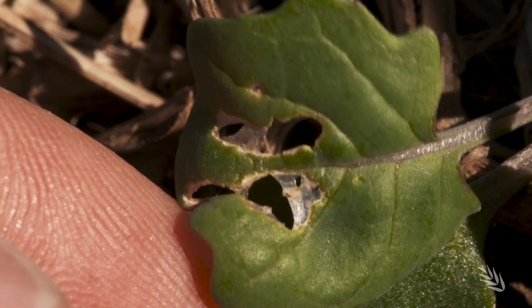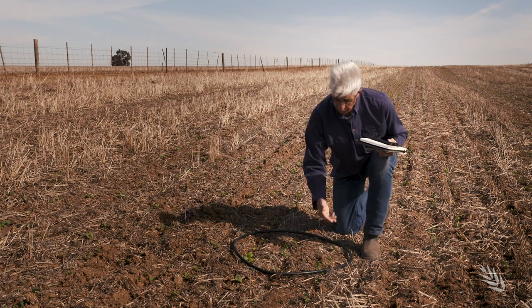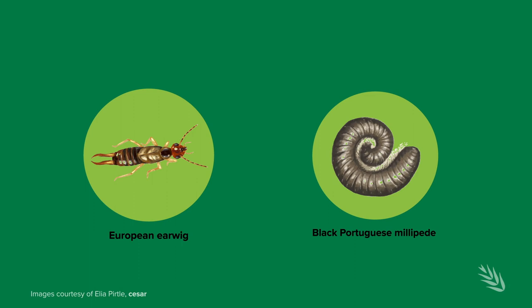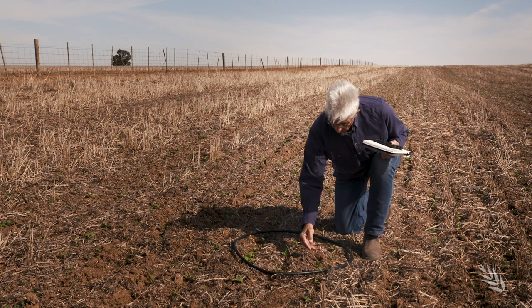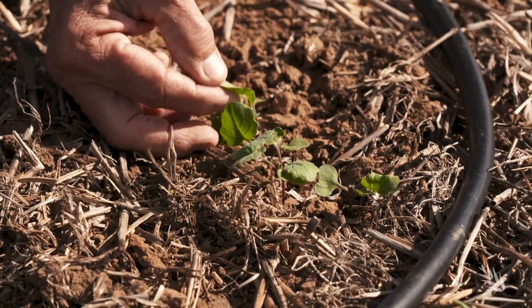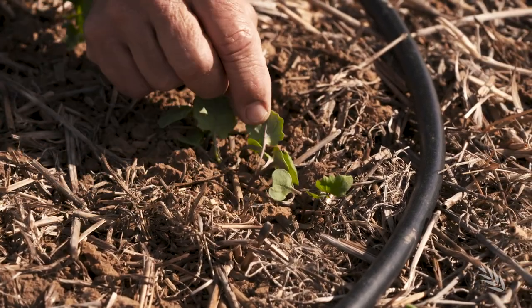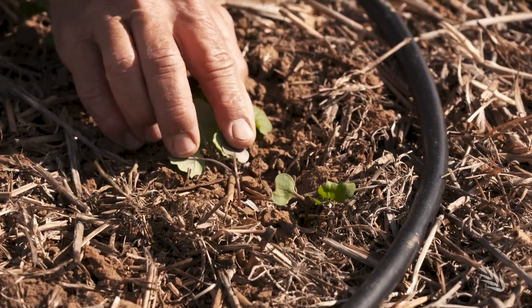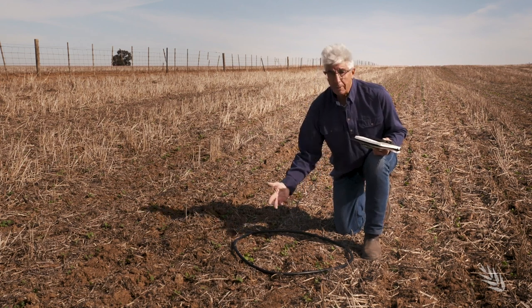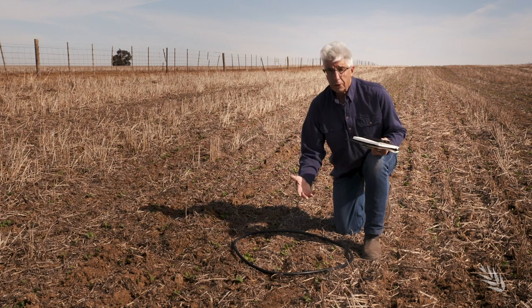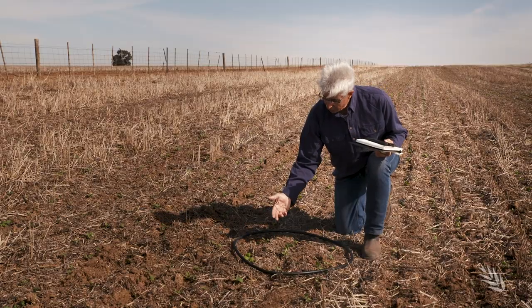For visual checks of the plants, we might be looking for chewing damage from pests like earwigs or millipedes, or sucking damage from mites. If we see plants that have been nipped off, it might indicate caterpillars or false wireworm larvae causing the damage. We're more likely to see the damage that's been caused rather than the pests themselves — though we might see beneficials like spiders or carabid beetles.